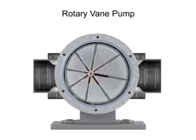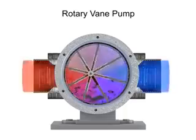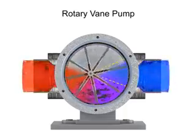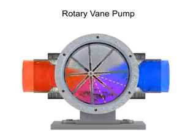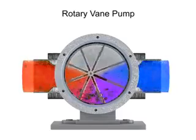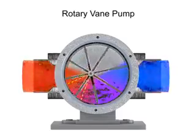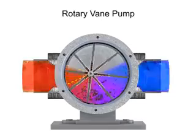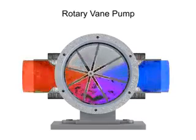Fluid enters at the largest chamber. As the vanes rotate and retract, the chambers get smaller, forcing fluid to exit through the discharge port.